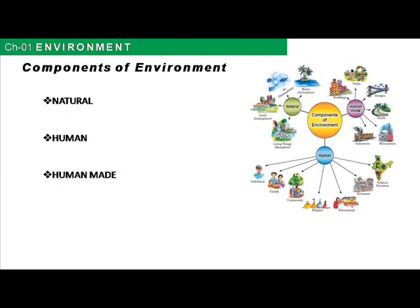Components of environment: there are three components — natural, human-made and human. First, the natural environment includes all living and non-living things occurring naturally on the earth without any contribution of human beings. Many of them existed even before the origin of humans. Examples include land, water, air, planets, plants, animals, etc.